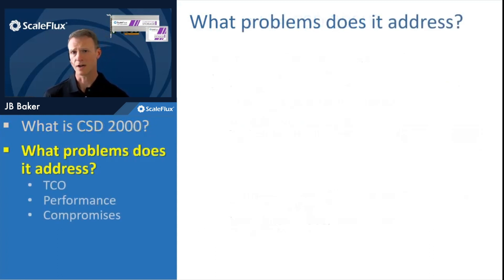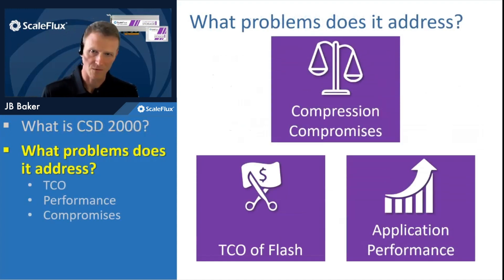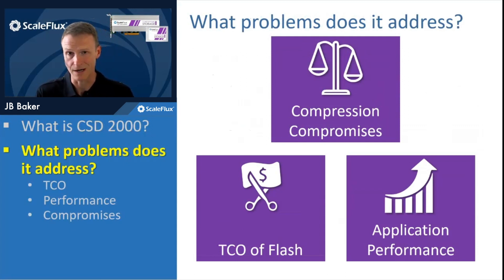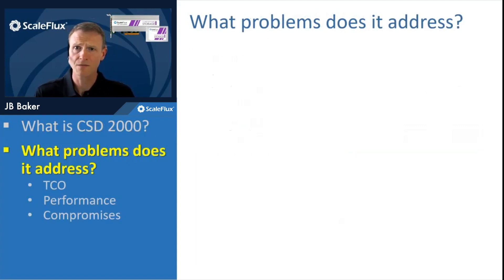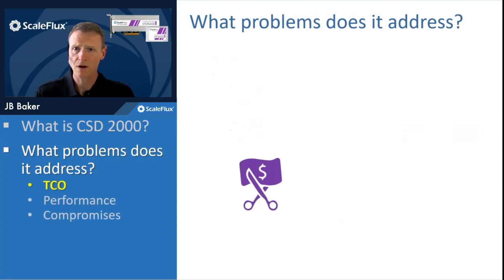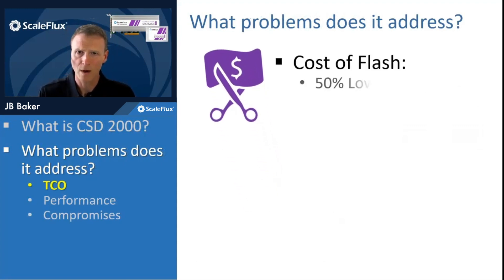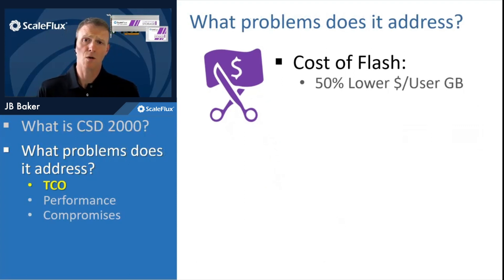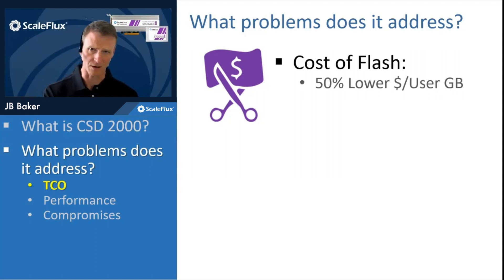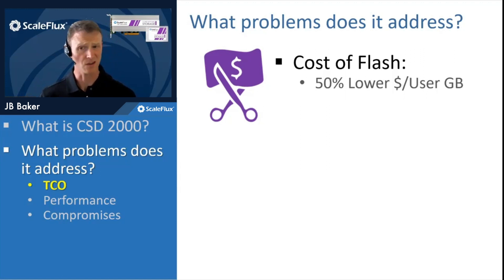In terms of the problems we address, we look at three classes: cost, performance, and the compromises that people usually have to deal with when they try to deploy compression. The first is cost. As we compress the data on the drive, we're using less space, so we expose that extra space back to you, the user, to write more data onto the drive. This lowers your effective cost per gigabyte — potentially in half, potentially more — depending upon the compressibility of your data.